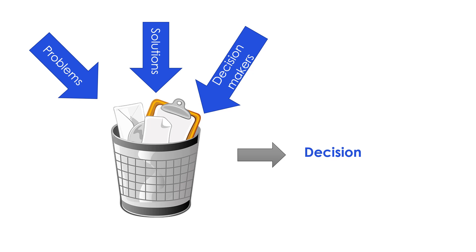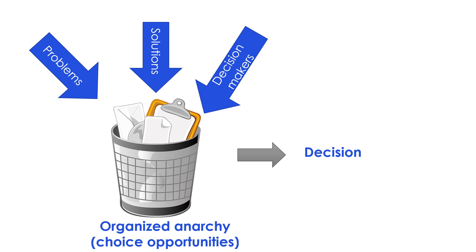The third stream is decision-makers — organizational members who pay attention to issues with the time and energy available to them. Decision-makers have other demands on their time, so their participation is fluid, and they may have different preferences for different solutions. The fourth stream is choice opportunities, which give the organization opportunities to act in ways that can be called decisions — such as signing contracts, hiring and firing employees, investing in a new company, or delegating tasks.